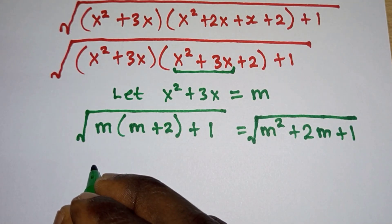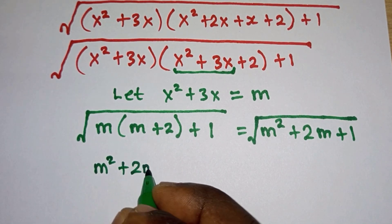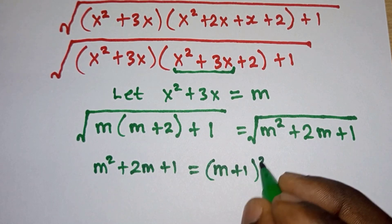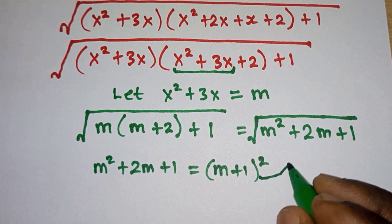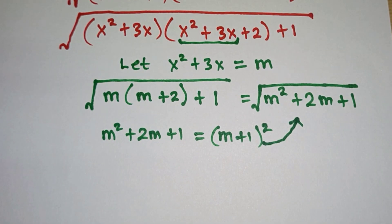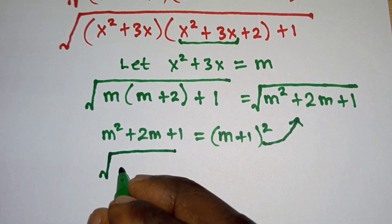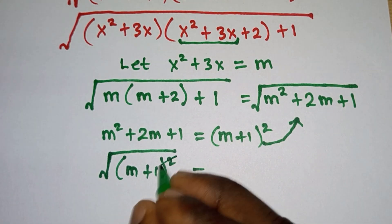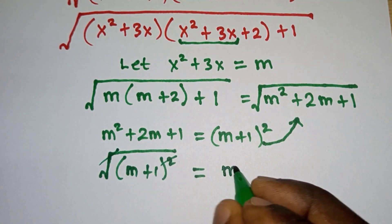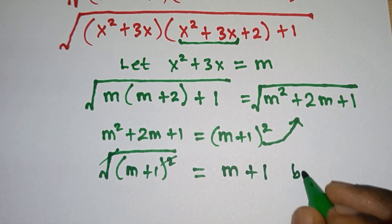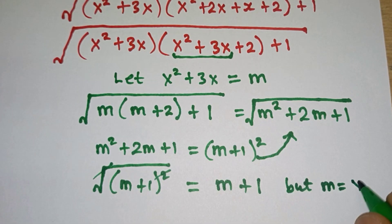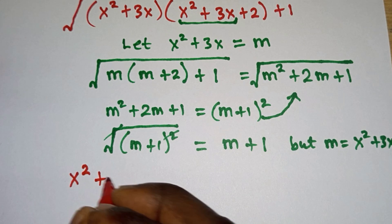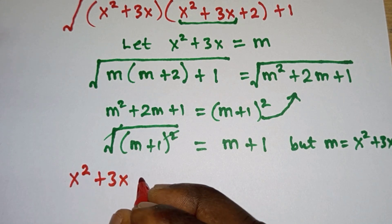From here we can write this as m squared plus 2m plus 1, which is the same as m plus 1 all squared. If you expand m plus 1 squared you get m squared plus 2m plus 1. So we have the square root of m plus 1 squared, and the square root and the square cancel, giving us m plus 1. Remember that m is x squared plus 3x, so we have x squared plus 3x plus 1.